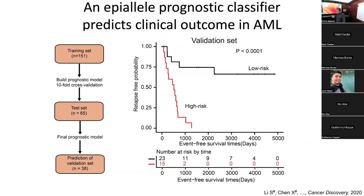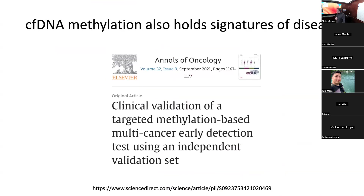A final comment on this: cell-free DNA — DNA floating in your blood — also carries its methylation signature, which tells you which tissue it probably came from and can be used for early cancer detection. It's an ongoing debate in the field whether genetics or epigenetics is better for predicting early cancer risk. The answer is probably going to be both, or better in some disease states versus others.